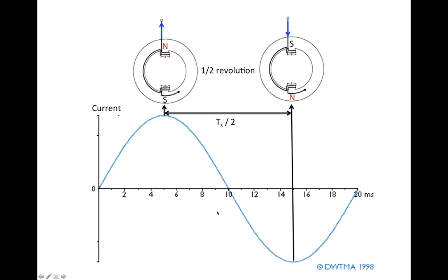The current follows a sinusoid. The horizontal axis is time — one complete period is 20 milliseconds. The inverse of the period is frequency, so one divided by 20 milliseconds equals 50 Hz. This power system has a frequency of 50 Hz. Suppose this phase is connected to the two vertical poles inside the stator — two opposing poles, which is one pole pair.